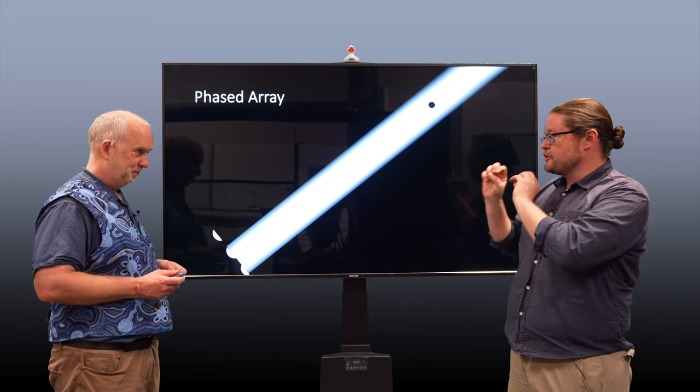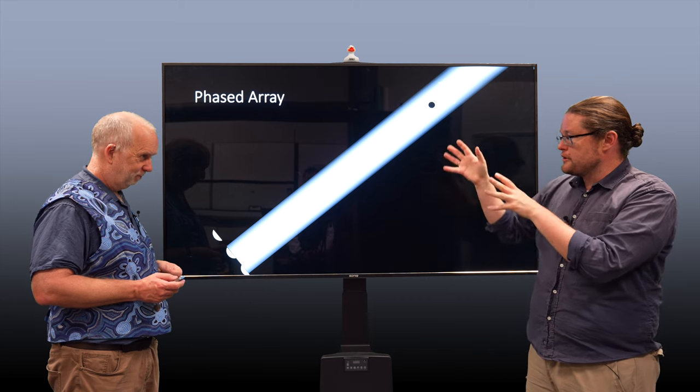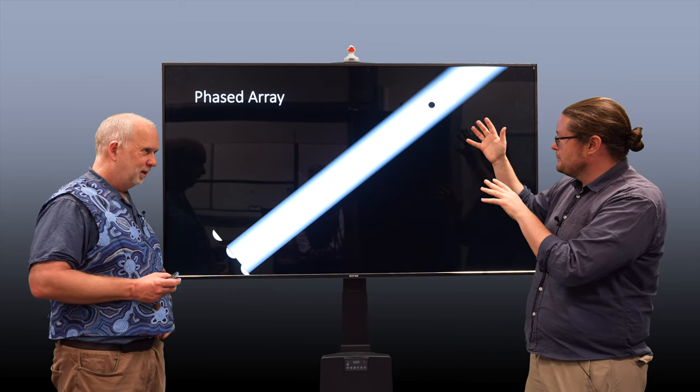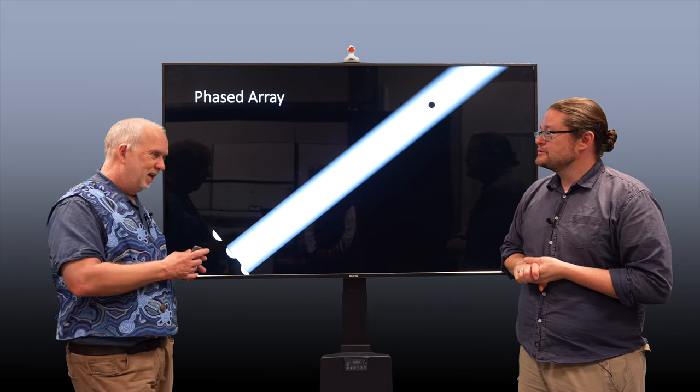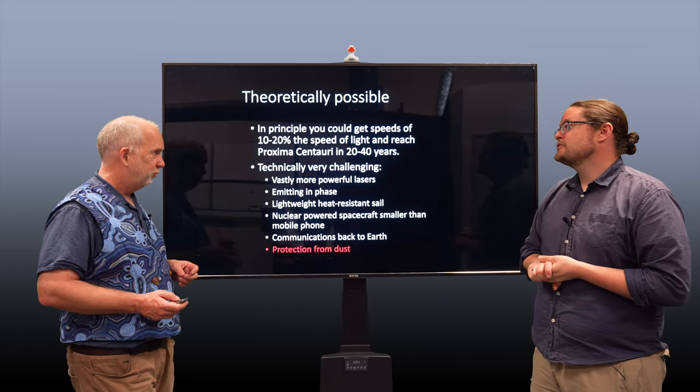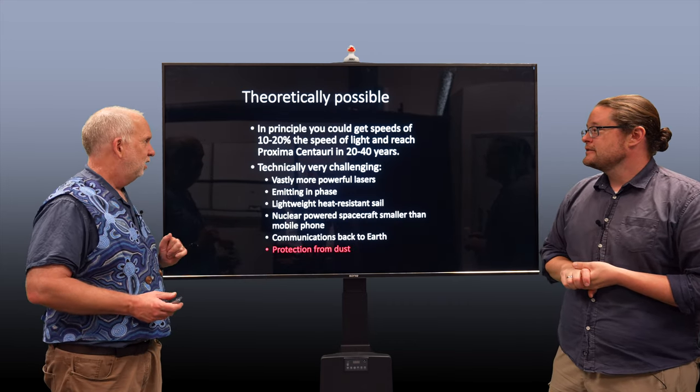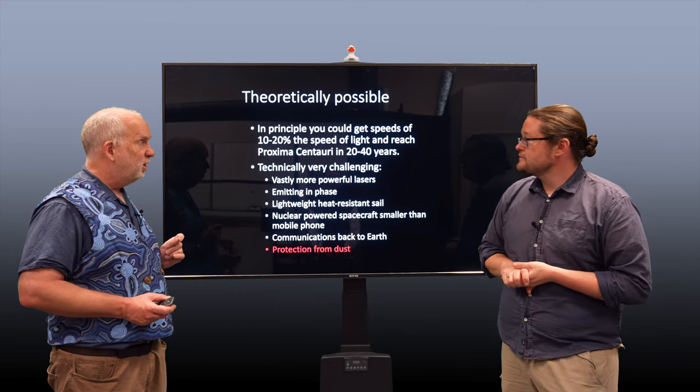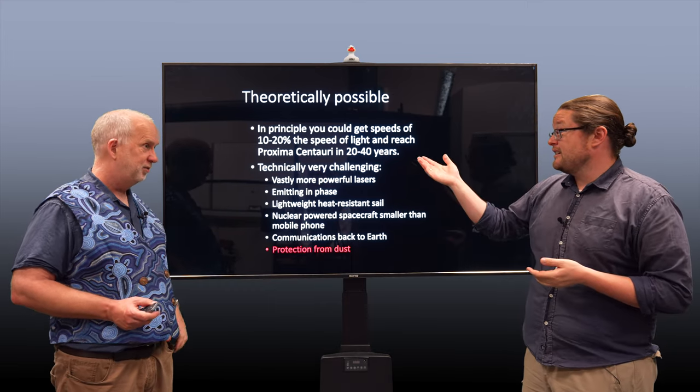So it's one of these things that's definitely doable or requires work, but we could achieve it, but still not going to send humans. So this whole project needs a lot of technological breakthroughs, but none of them violate the laws of physics. So in principle, you get speeds of 10 to 20 percent of the speed of light and reach Proxima Centauri in a person's lifetime.